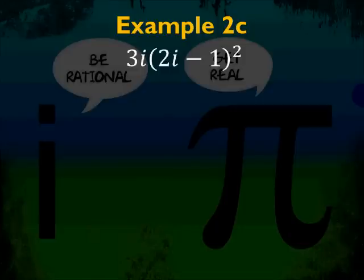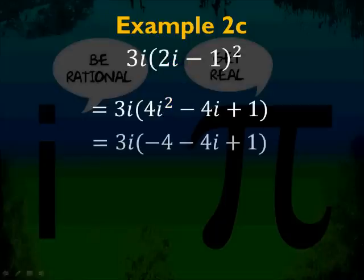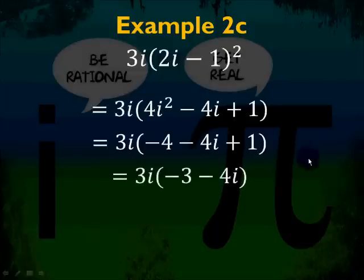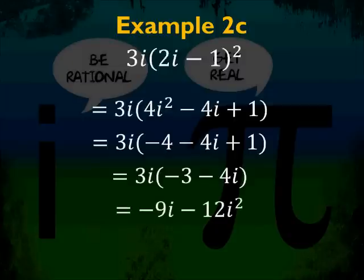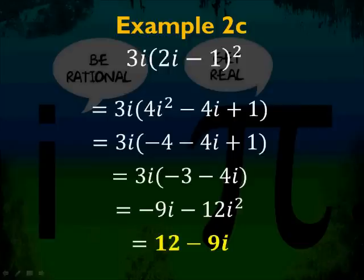Example 2c: 3i times the quantity 2i minus 1, squared. First square 2i minus 1 to get 4i squared minus 4i plus 1. This simplifies to negative 4 minus 4i plus 1, so you have 3i times the quantity negative 3 minus 4i. Distributing gives negative 9i minus 12i squared, which becomes positive 12. So you get 12 minus 9i. Remember to always write the real part before the imaginary part.